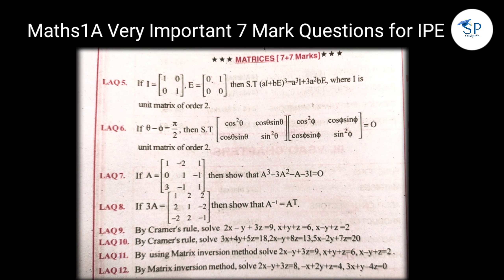And next, matrices. The matrices — 2,700 — and very easy matrices, very easy chapter. We will check the first 7-marks question: if I is equal to [1, 0; 0, 1] and E is equal to [0, 1; 0, 0], then solve that (aI + bE) whole cube is equal to a³I + 3a²bE, where I is the unit matrix of order 2.